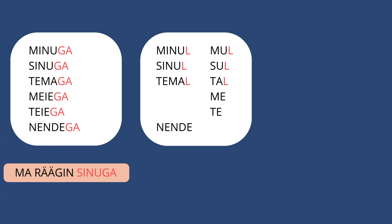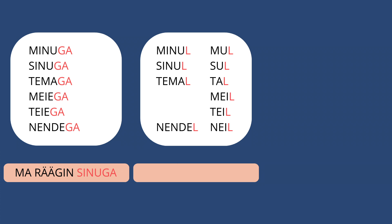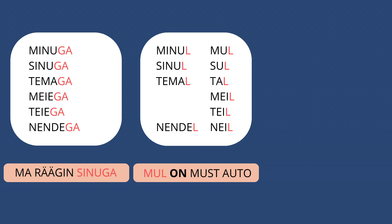Meie and teie only have one form with a small change in the stem: 'meil', 'teil', and then 'nendel', with the short form 'neil'. So the last three rhyme: meil, teil, neil. We use this form in sentences such as 'Tal on ilus maja' — he or she has a beautiful house. The verb is 'on' because we are saying a beautiful house is on him or her. Or: 'Mul on must auto' — I have a black car.